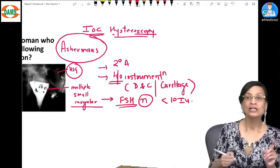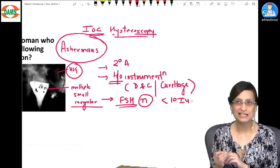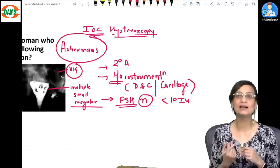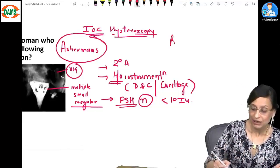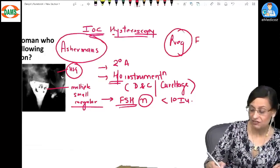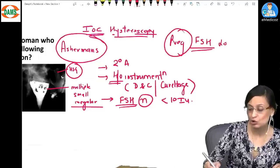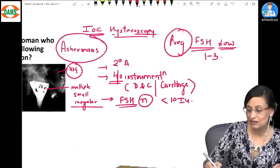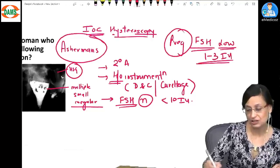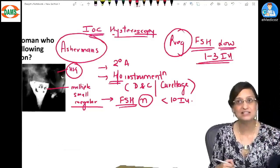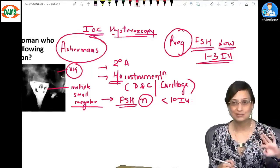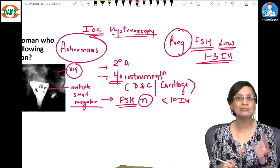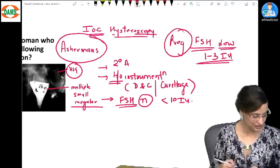If you talk about pregnancy, pregnancy also has secondary amenorrhea, but in pregnancy the FSH levels are low. They are usually one, two, three international units. So they are suppressed levels, whereas in Asherman's they are not suppressed. They are less than 10 but they will be in the normal range. Is that clear?